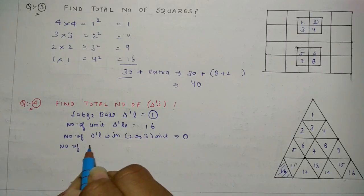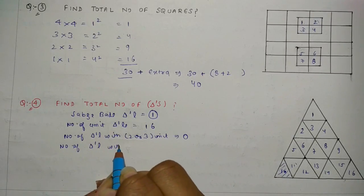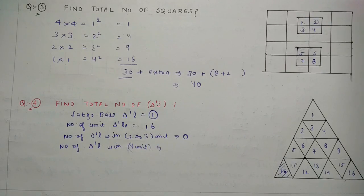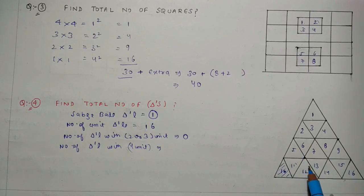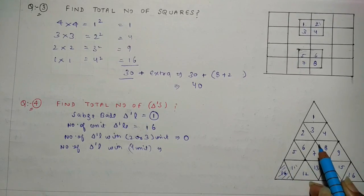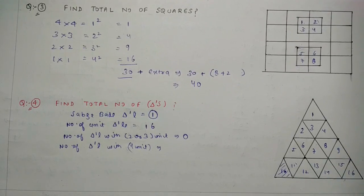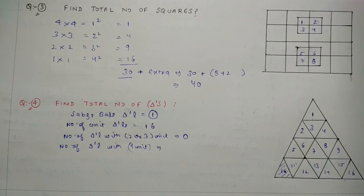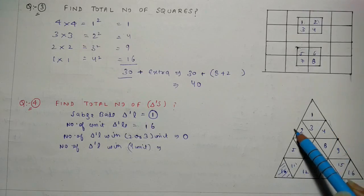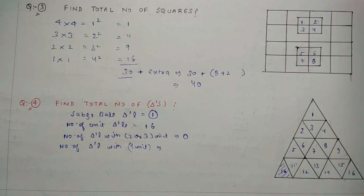Phir dekhte hain number of triangles with 4 units. 4 unit triangles ko milao aur ek triangle banao. 1, 2, 3, 4 mila dete hain toh ek banta hai. Phir ek aur banta hai — 2. Ek aur banta hai — 3. Ek aur — 4. This one is 5 and this one is 6.